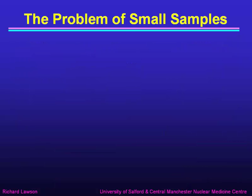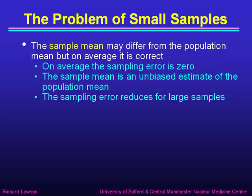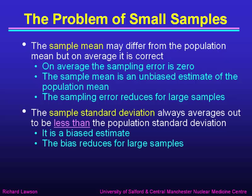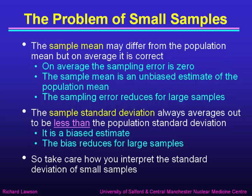The problem with small samples is that the sample mean may differ from the population mean, even though on average it's correct. On average, the sampling error is zero, so we can say the sample mean is an unbiased estimate of the population mean, and the sampling error reduces for large samples. But the sample standard deviation always averages out to be less than the population standard deviation — it is biased. It underestimates the true standard deviation. The bias reduces for large samples, but we get into difficulties with small samples. The lesson is to take care how you interpret the standard deviation of small samples. That is the end of the first part of this lecture on sampling.